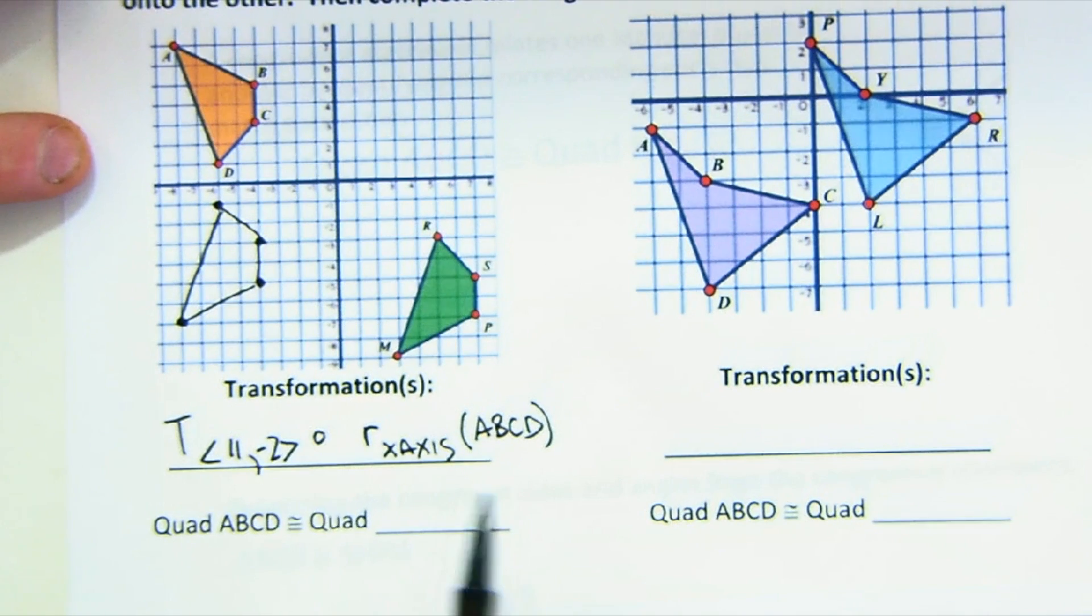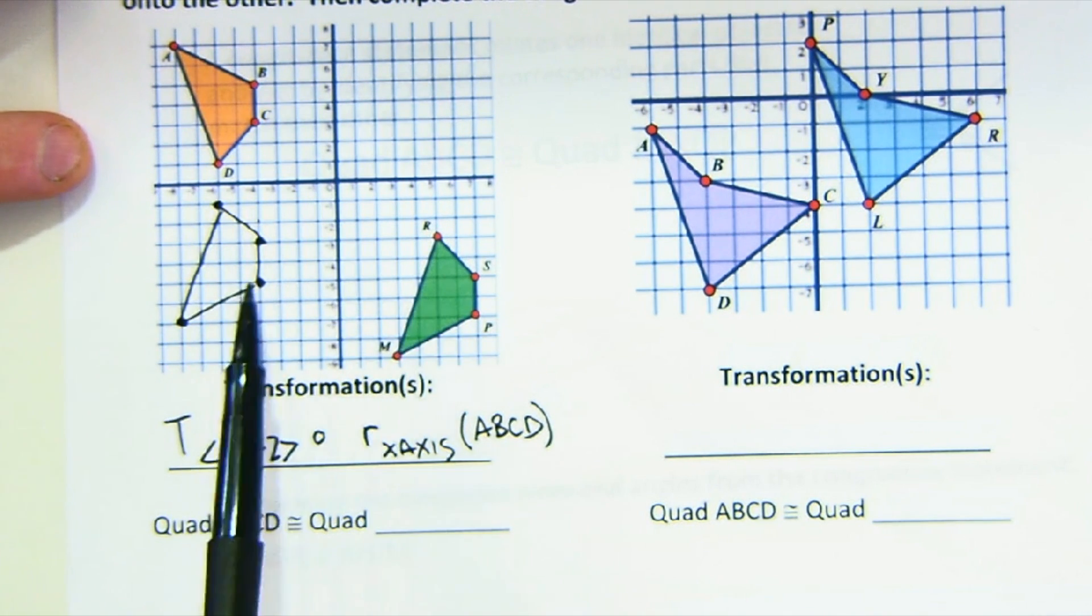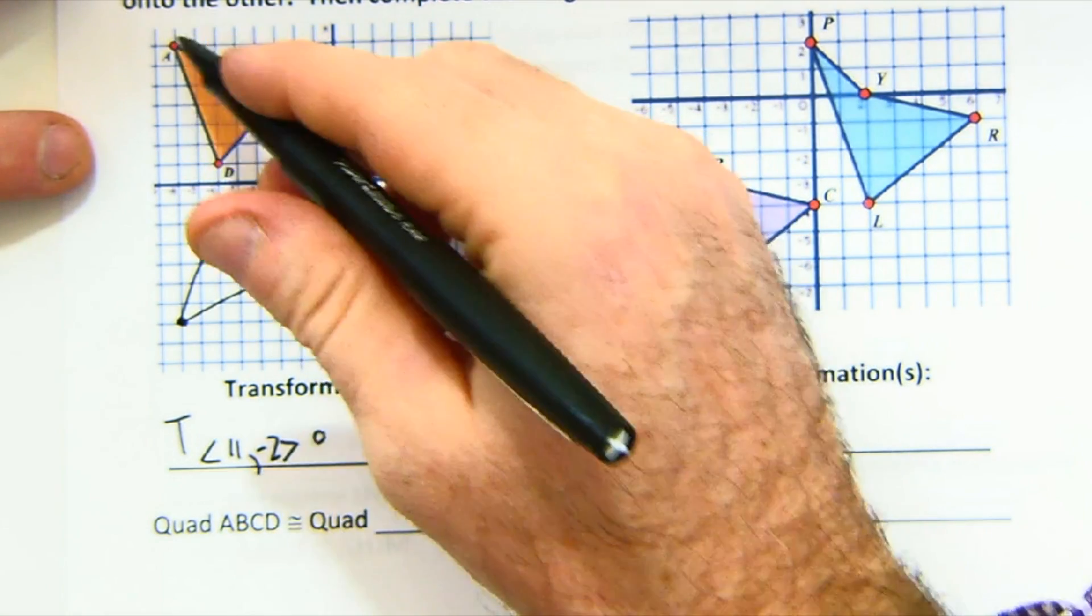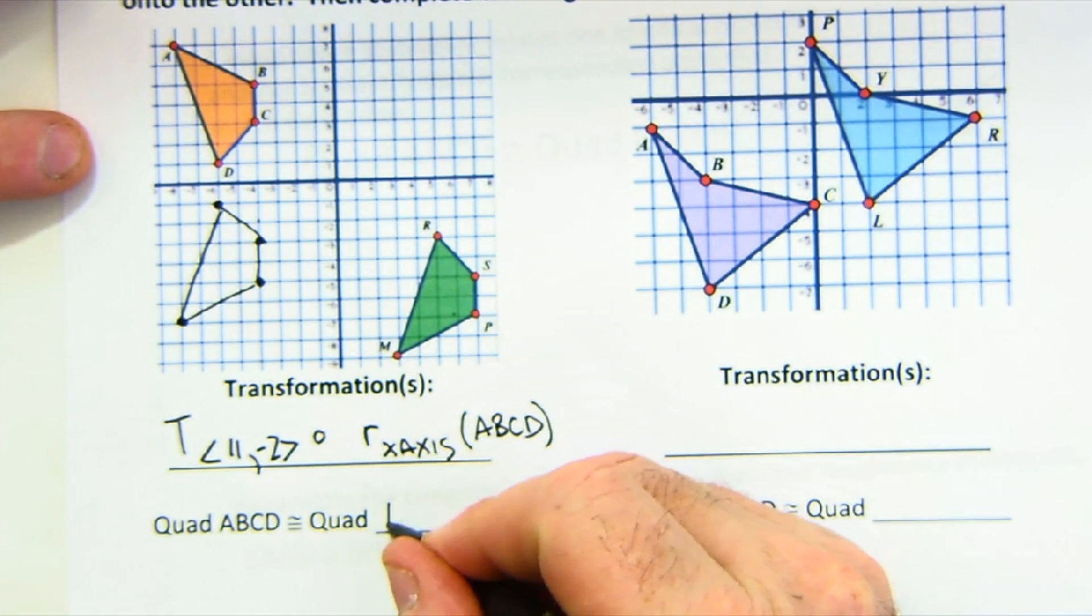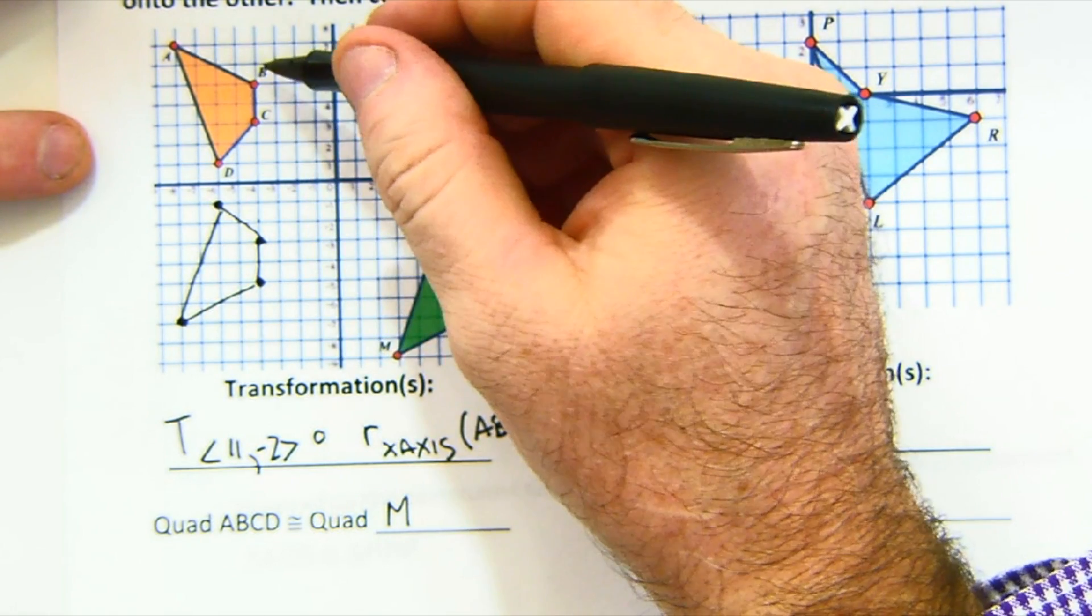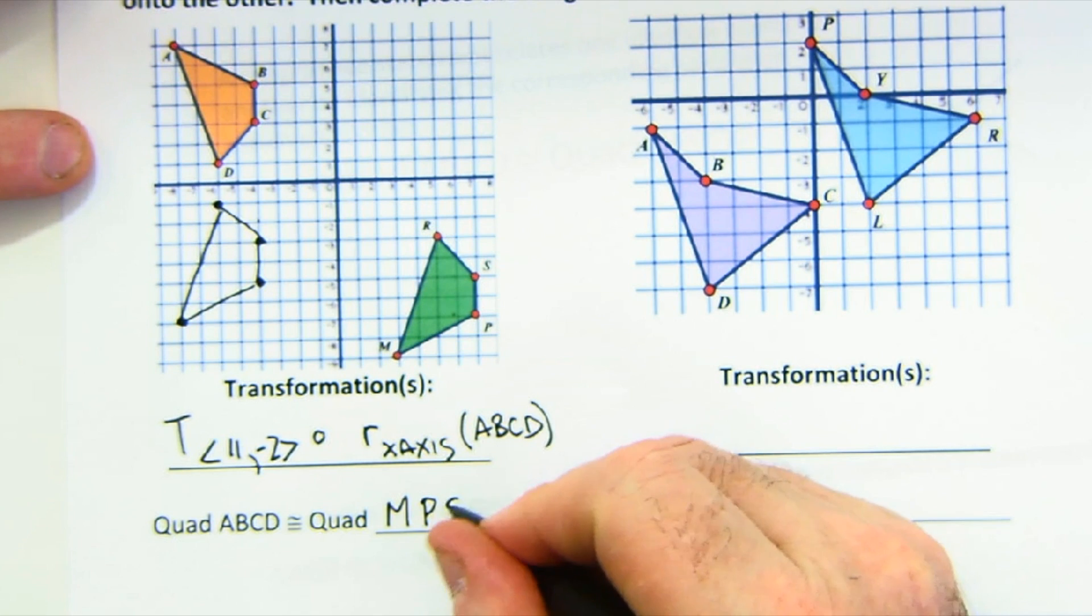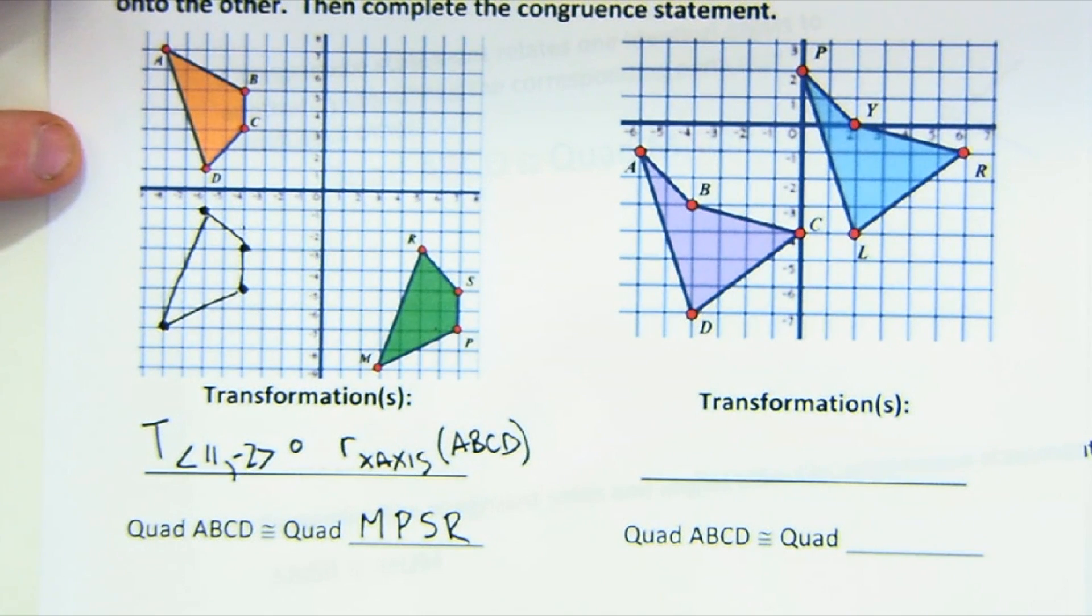So if I did a reflection first, now my orientation matches, and I can translate it, drop it right on top. And it would work out that A matches with the M. And then the B matches with P, S, and R. That would be the connection there.